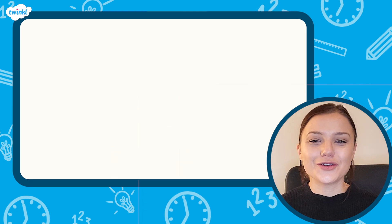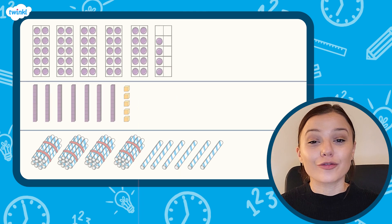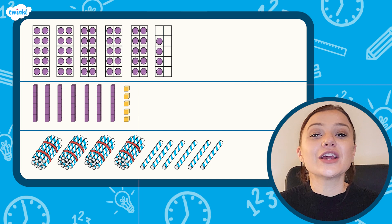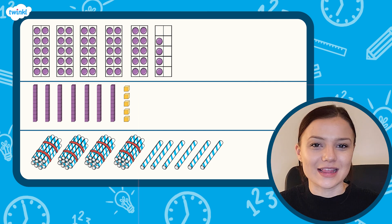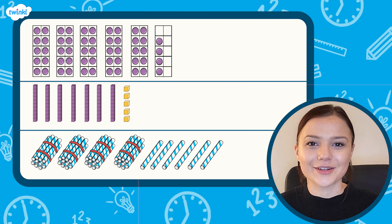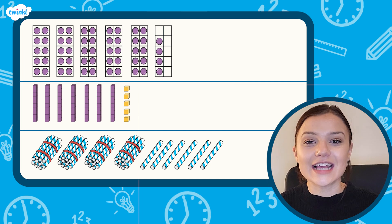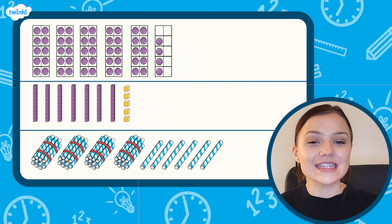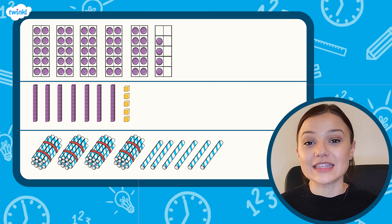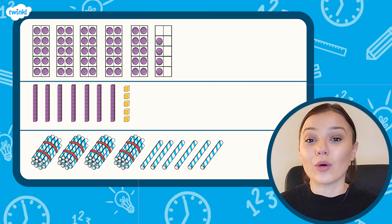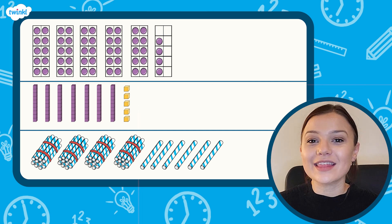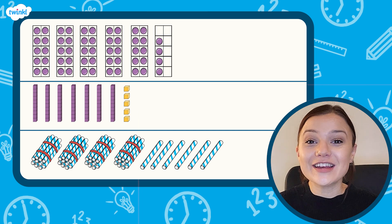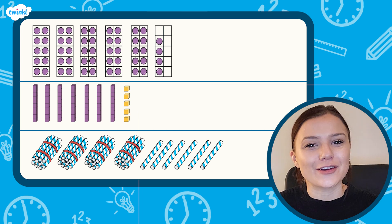Now it's your turn. Three different numbers have been represented using different maths equipment. In each case, you need to identify how many tens and how many ones there are and what two-digit number they each represent. Pause the video and have a go yourself.